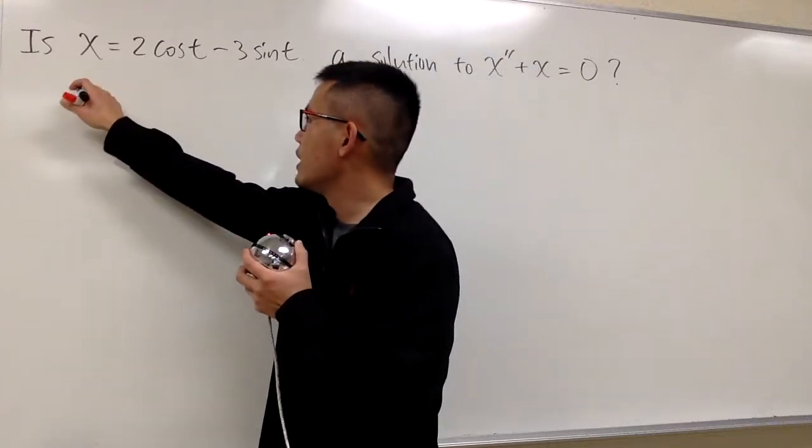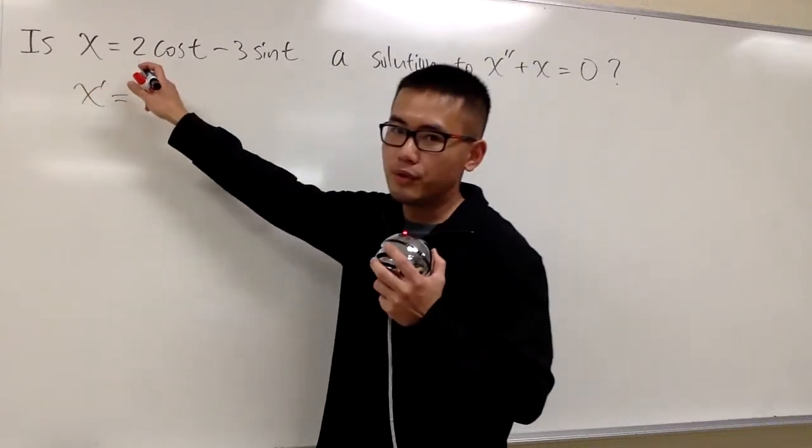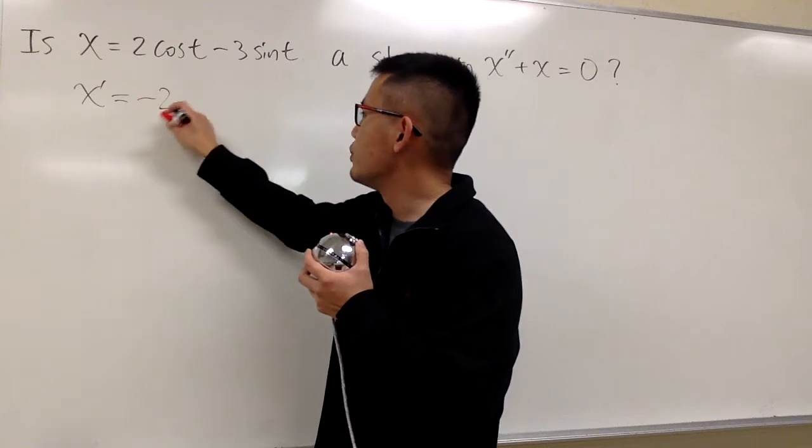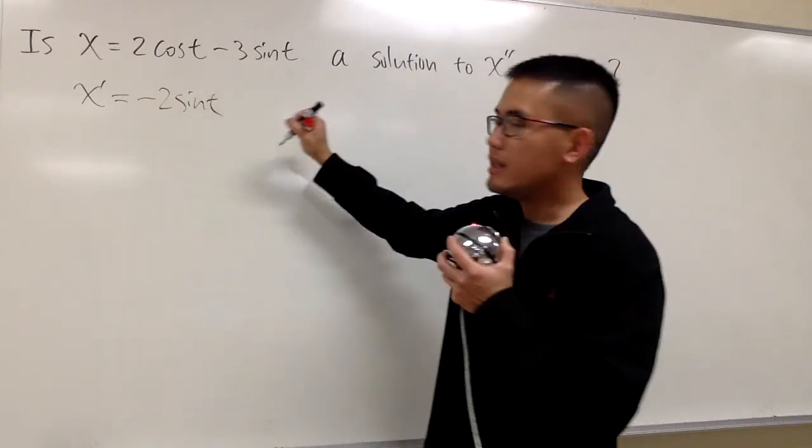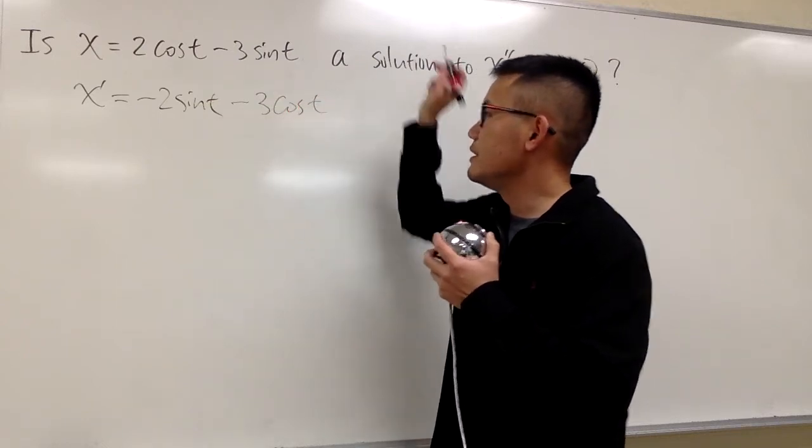So let's get to work. Here we have x prime, it will be the derivative of 2 cosine t is negative 2 sine t, and then the derivative of negative 3 sine t is negative 3 cosine t.